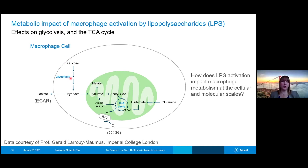We'll also take a look at the TCA cycle and the rates of metabolites through the TCA cycle, which is correlated with the oxygen consumption of the cells, while glycolysis is correlated with the extracellular acidification of the cells. The data for this example was provided by Professor Gerald Leroy Mamou from the Imperial College of London, and we thank him for his help.